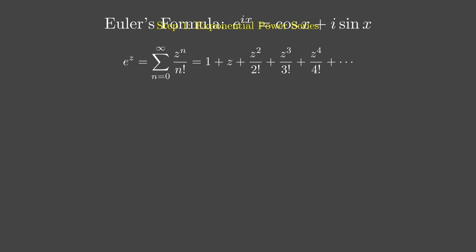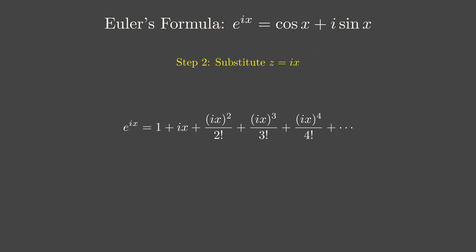Let's keep this in mind as we move forward. Now let's try something cool. What happens if we take that series and plug in z equals ix? That's where the imaginary number i comes into play. So we get e to the ix equals 1 plus ix plus (ix) squared over 2 plus (ix) cubed over 3 plus (ix) to the 4th over 4 plus dots. Notice how i is now part of every term. This is our first step into the imaginary world, and it's about to get interesting.